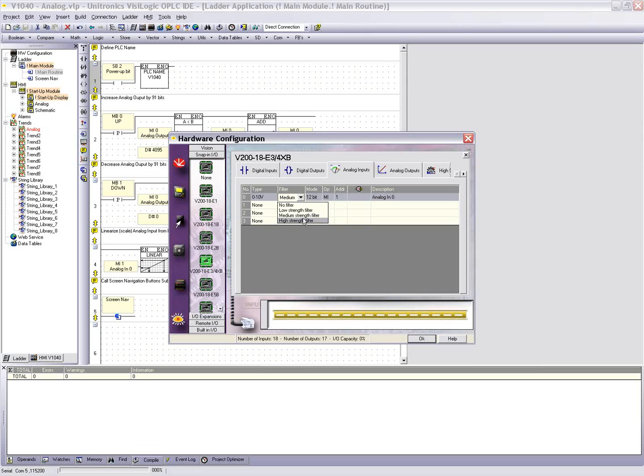I'll leave it on 0 to 10. You have the option of defining a filter as well: no filter, low strength, medium, or high. This is really doing is if you have a sensor that's fluctuating slightly, you can select the software filter here, which basically just takes the average of the last couple readings and calculates that average so you can eliminate any jittering input or slightly fluctuating value, just so it looks more presentable for any calculations or on the HMI screen.